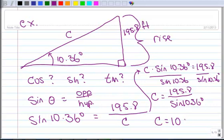So I am going to multiply both sides by C. So I have C times the sine of 10.36 degrees equals 195.8. And divide both sides by the sine of 10.36. Again, make sure you're in degrees. So C is going to equal 195.8 divided by the sine of 10.36 degrees. And when you do that, when you calculate that out, you get 1,088.8 feet.